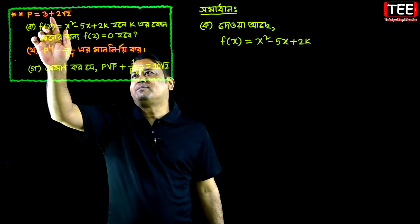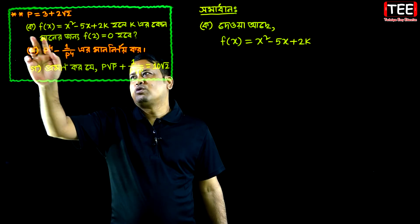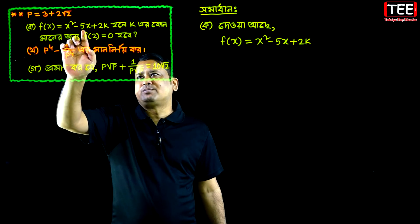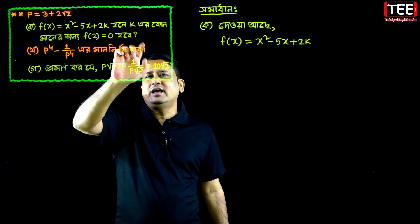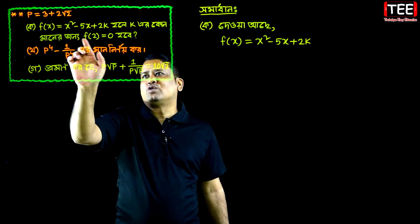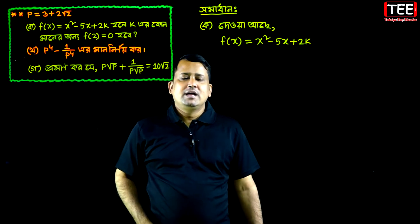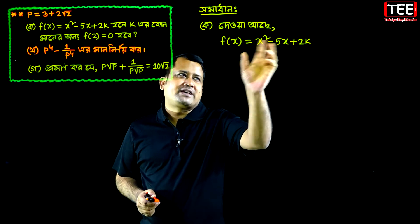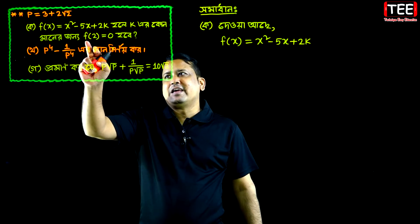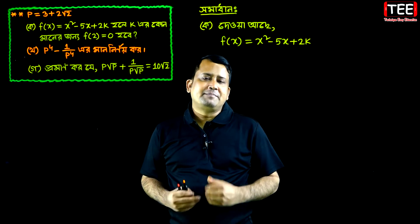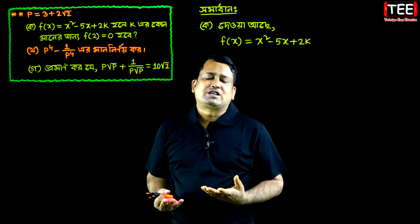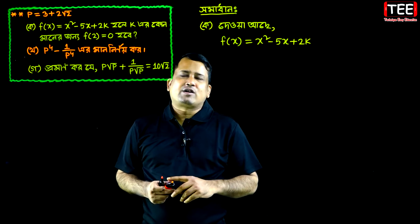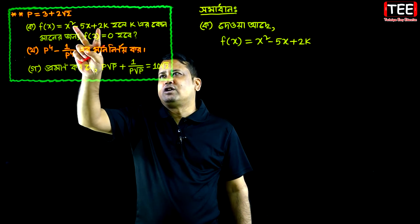Given that f(x) equals x squared minus 5x plus 2k, and f(2) equals 0. We are shown that f(x) equals x squared minus 5x plus 2k. Now f(2) equals 0.